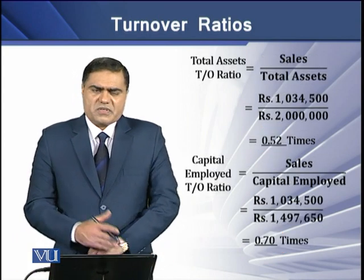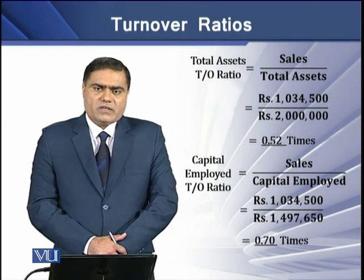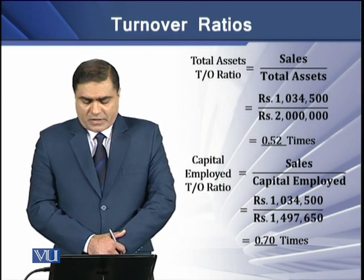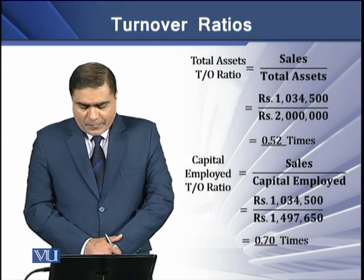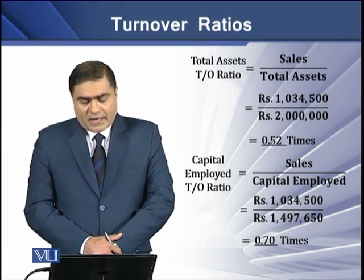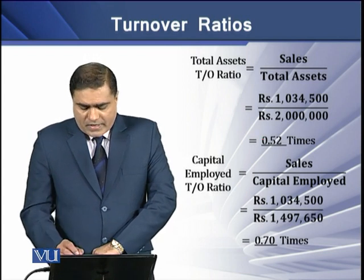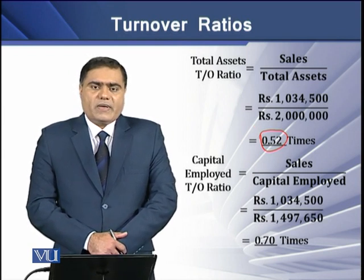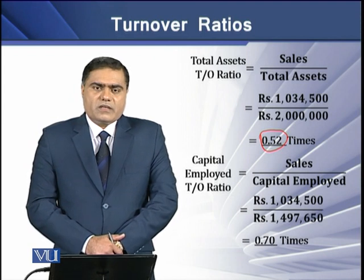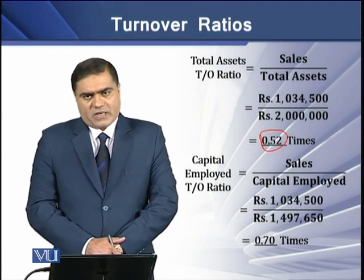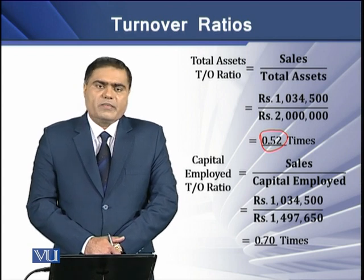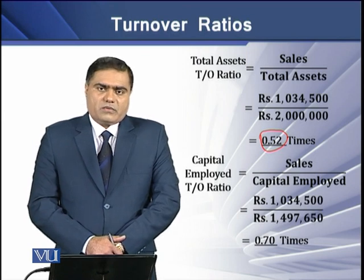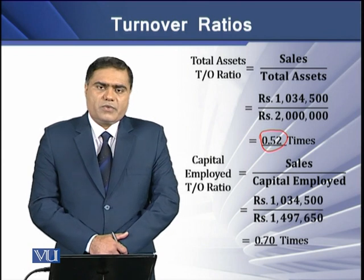Then we have total assets turnover ratio. This ratio tells us how much of the amount invested in total assets a firm has converted into sales. Higher is the ratio, higher is the efficiency of asset management by the company. If we have sales of 1.034 million and total assets of 2 million, we get a ratio of 0.52 times. This means the firm has created sales equal to only half of its assets, which is apparently not good management. At minimum, the turnover ratio in assets should be equal to 1.